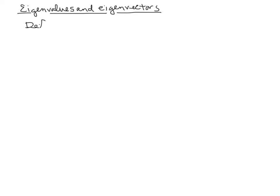Let's do a definition here first of eigenvalues and eigenvectors. What the definition boils down to is A times v is equal to lambda times v. This lambda in this definition is a scalar — meaning it's some number — and this is called the eigenvalue.